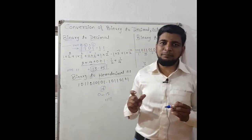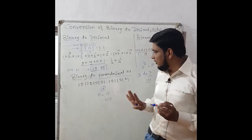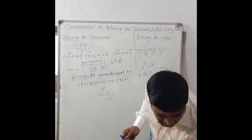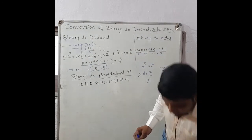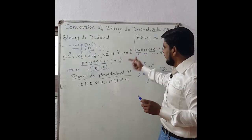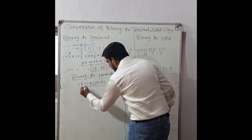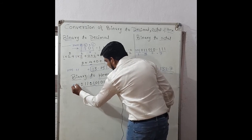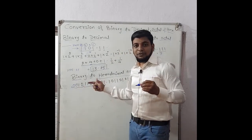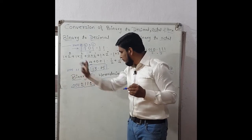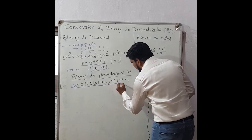So if a binary number is given and we have to convert it to hexadecimal form, as we made a group of three bits for octal, here we will make a group of four bits. If only two bits remain at the MSB, we add two more zeros. We cannot add zeros to the LSB as that would change the number, but adding to the MSB is fine. Similarly in the fractional part, make groups of four bits starting from the point.